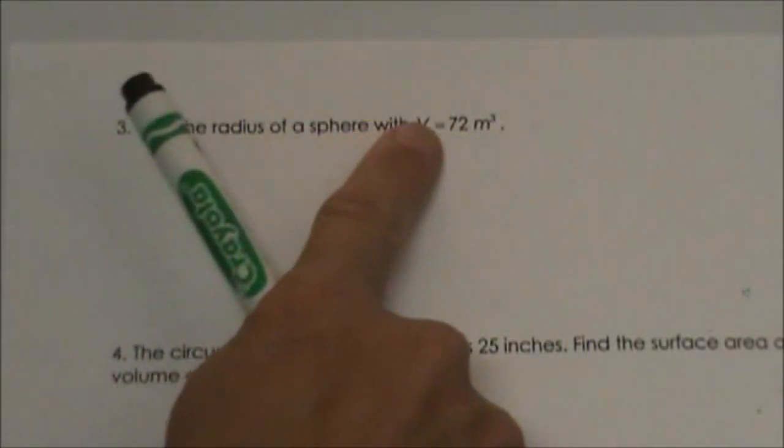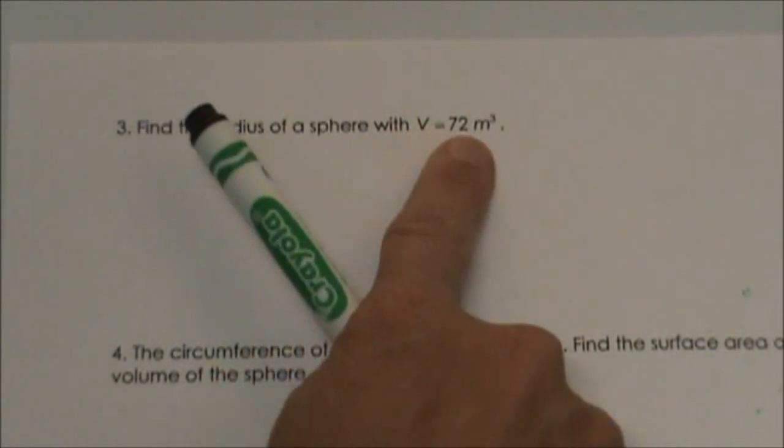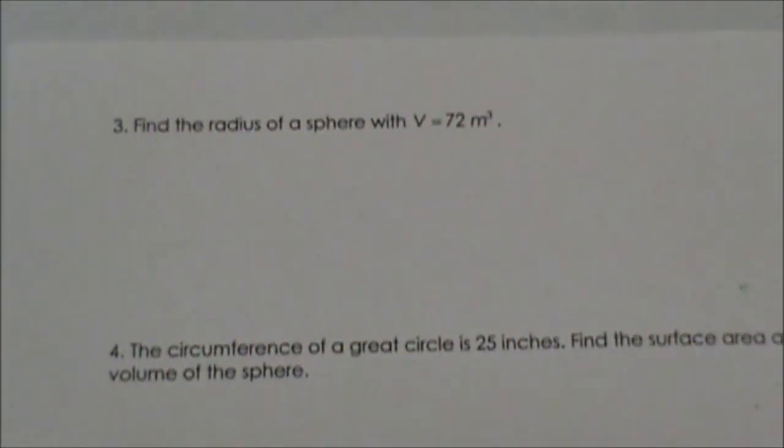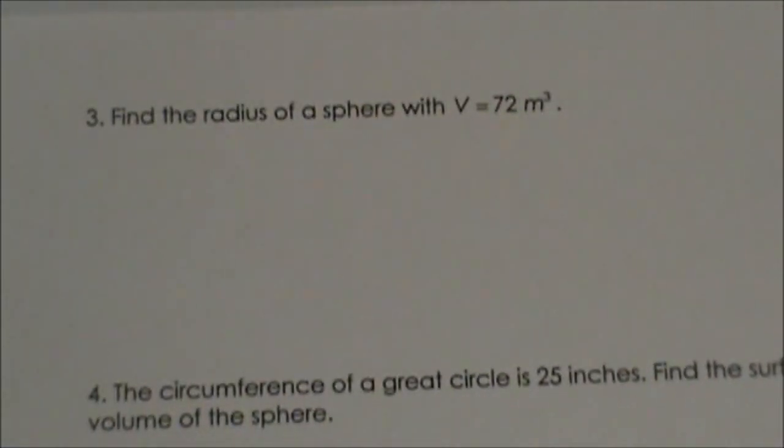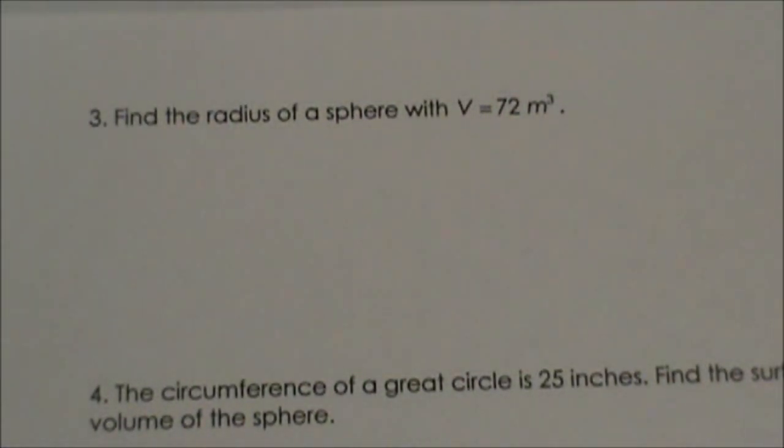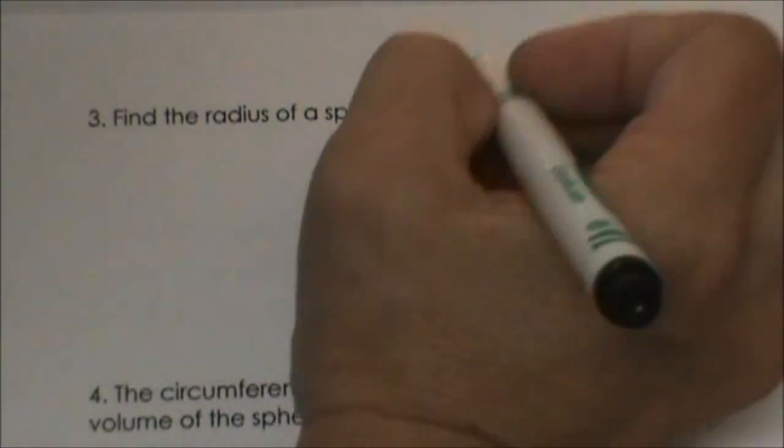Find the radius of a sphere with a volume of 72 meters cubed. This is a backwards problem and there is no easy way to do it other than just to undo it. Let's look at what we have.